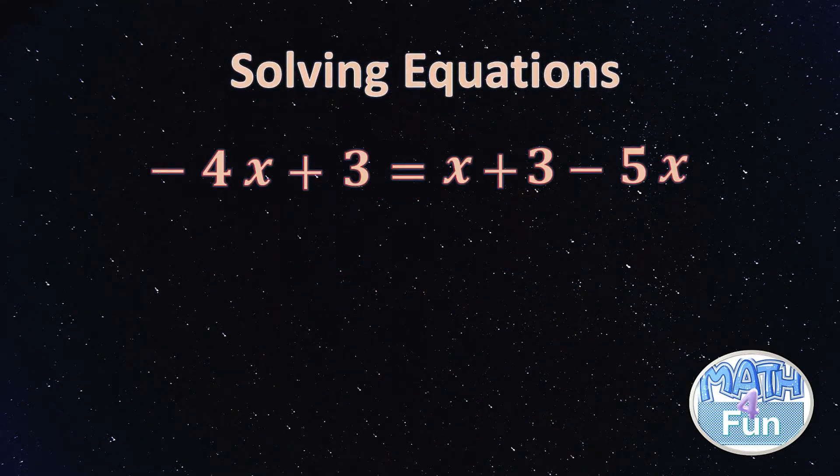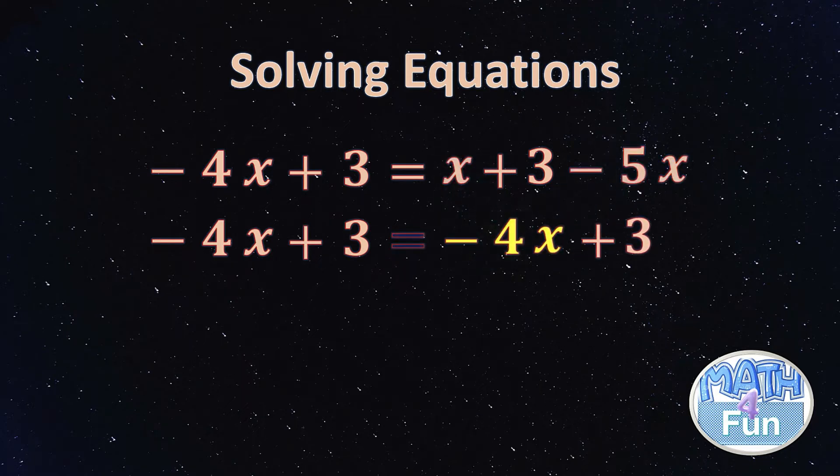Here we have -4x + 3 = 2x + 3 - 5x. What do we do here? First of all, we can simplify before we start solving. On the right side we have x minus 5x, so we simplify it. We can write everything as it is, and we can simplify x - 5x to get -4x.